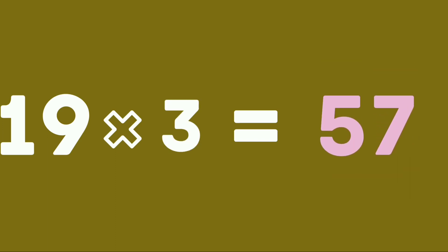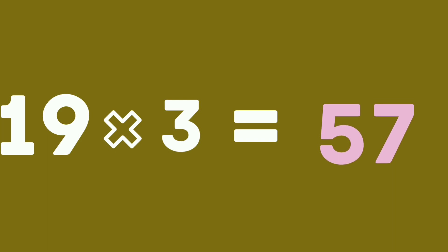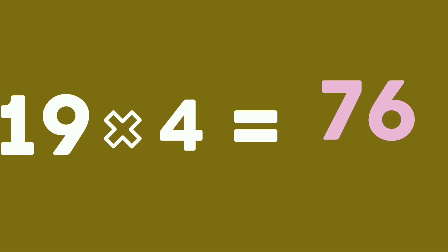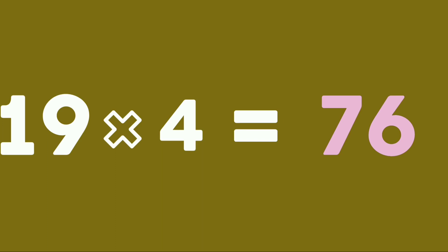Nineteen threes are fifty-seven. Nineteen threes are fifty-seven. Nineteen fours are seventy-six. Nineteen fours are seventy-six.